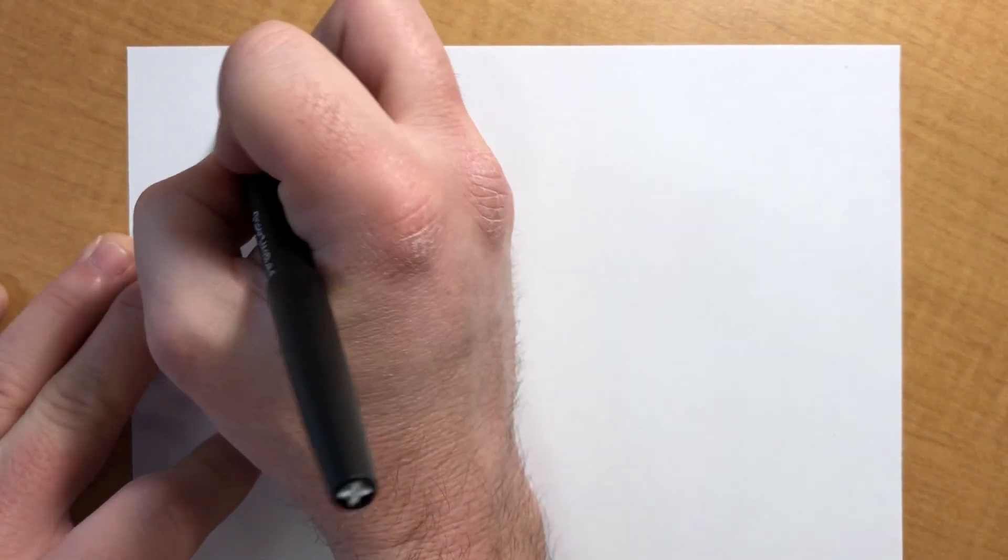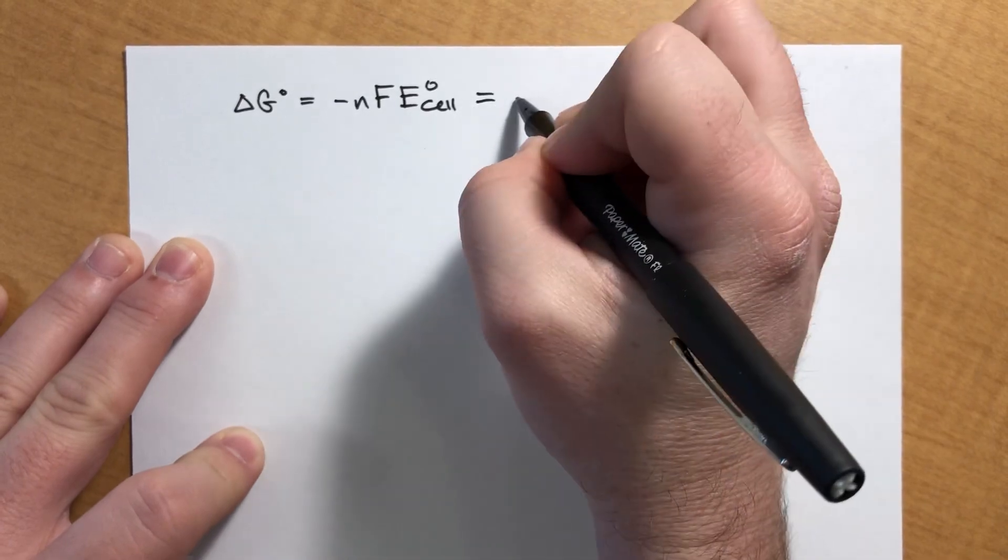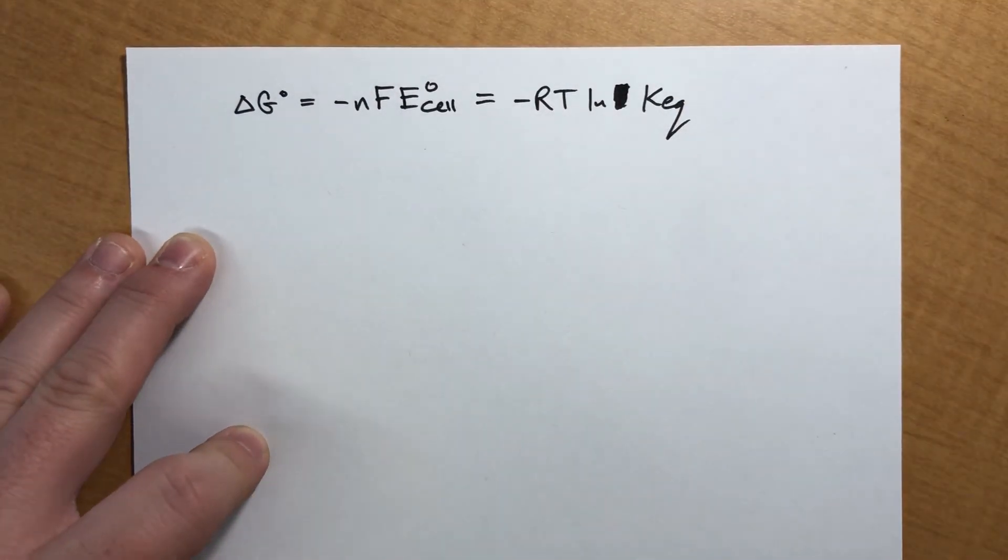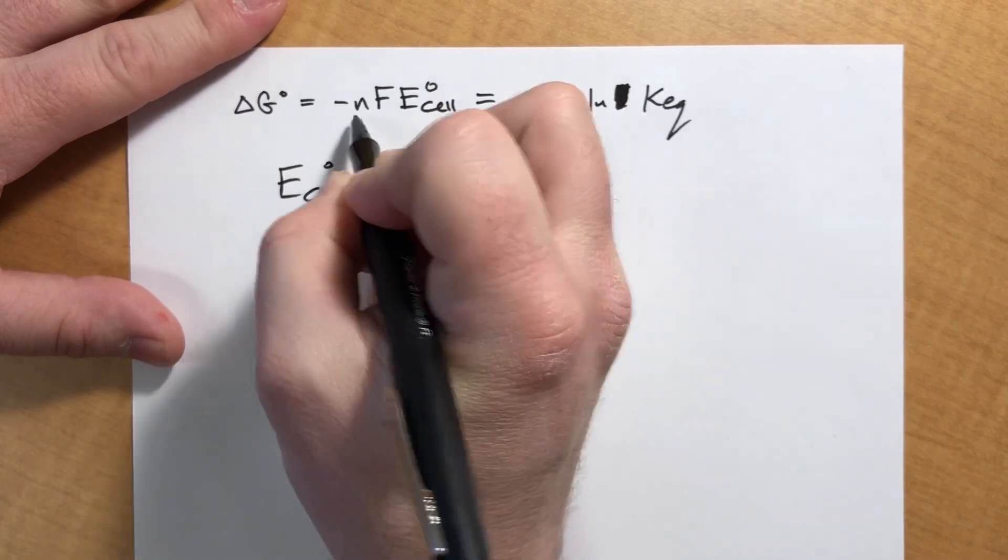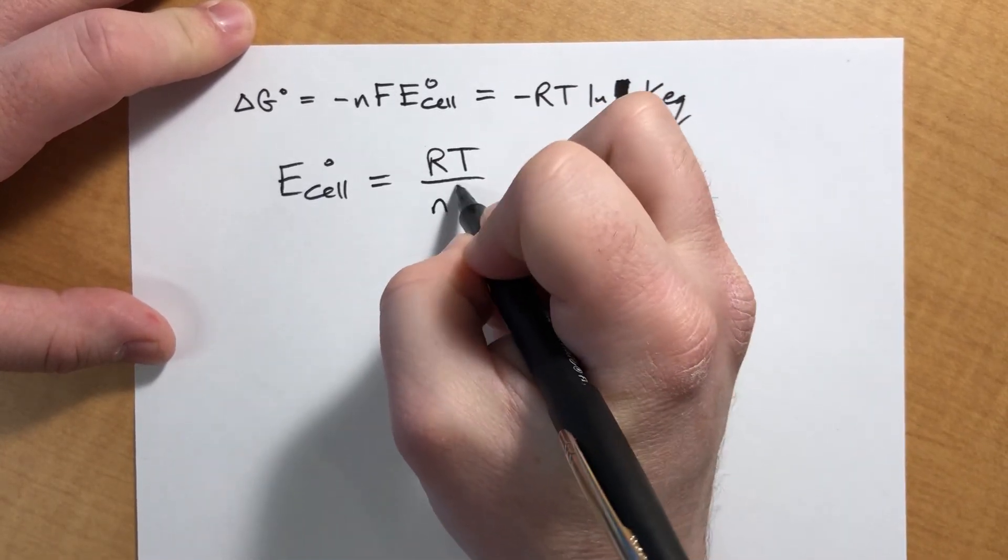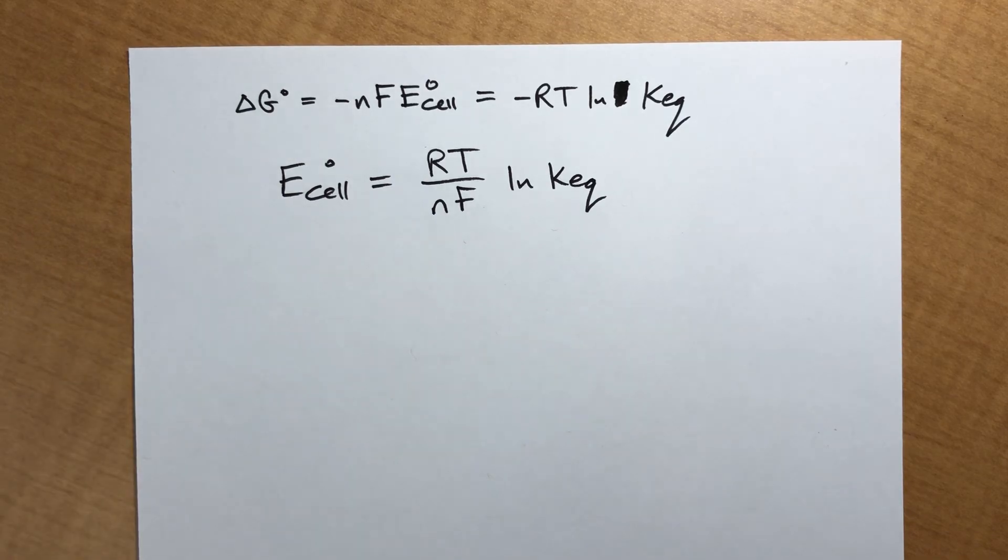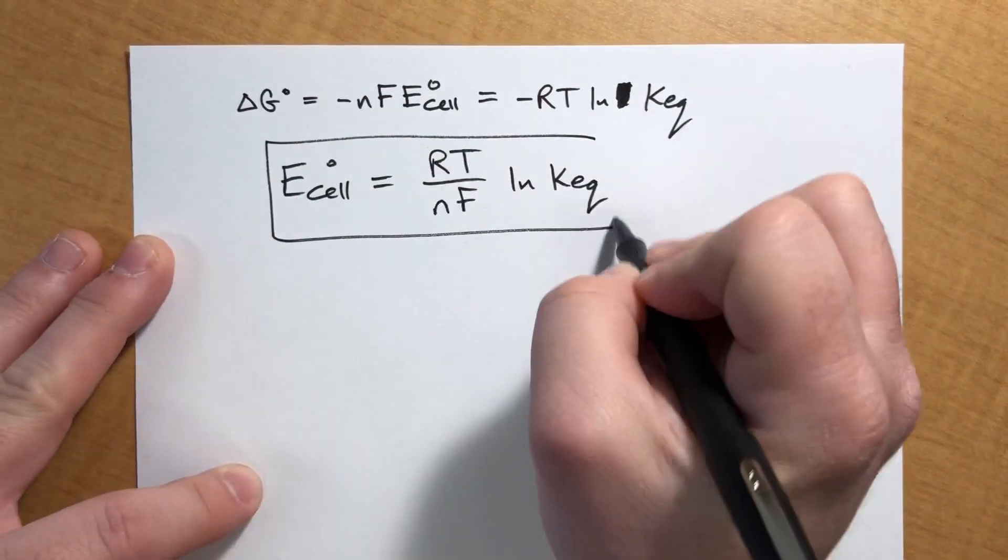Continuing the trend that we saw in the last chapter is if you have two equations that are equal, you smash them together. It turns out that delta G is equal to negative NF E sub cell, but it's also equal to negative RT natural log of KEQ, which we saw in the last chapter. Well, if we set those things equal, the negative signs cancel out, and we can rearrange things to solve for E sub cell. So we basically divide NF to the other side and the negative signs go away. So what we end up with is RT over NF natural log of KEQ.